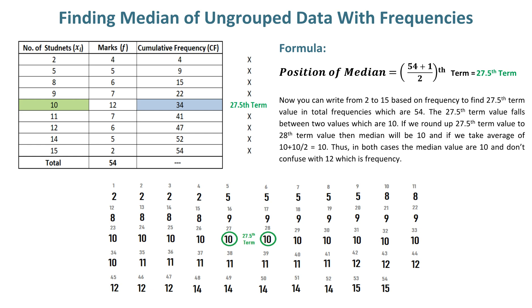Thus, start from 22 by writing 10 twelve times. The first value of 10 becomes the 23rd term, the second becomes the 24th term, and so on through the 28th term.